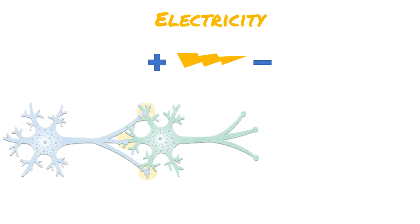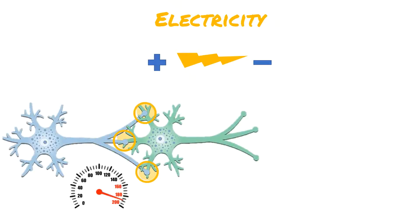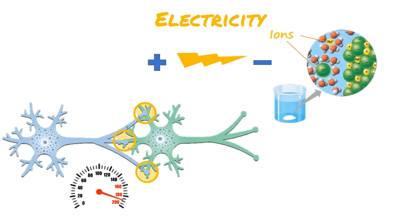Before we talk about neuronal communication, let's take a moment to iron out some important details regarding electricity. First and foremost, electricity always travels in one direction, from positive to negative. Electrical signals in neurons, which are known as action potentials, travel very quickly — approximately 100 miles per hour. The last important point is that the flow of electricity is only possible in the presence of charged atoms known as ions.